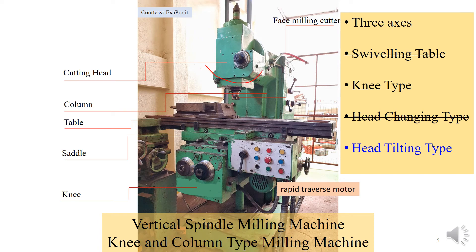In this configuration the head can be swiveled in this direction, providing flexibility for cutting slanted surfaces. There are also milling machines where the head can be swiveled in the other direction as well. In our training workshop there is a vertical milling machine with this type of tilting head, and currently a face milling cutter has been mounted on it.